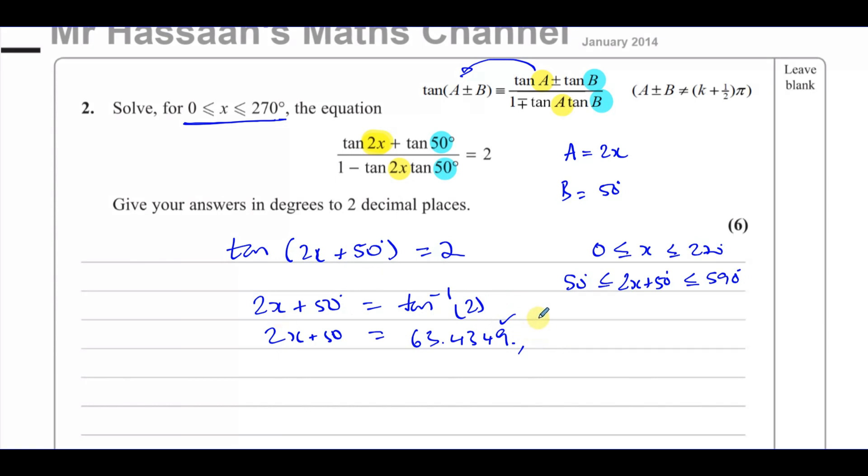It's just one main angle, which every 180 degrees, because the tan curve looks something like this. This is the asymptotes. And it just repeats every 180.